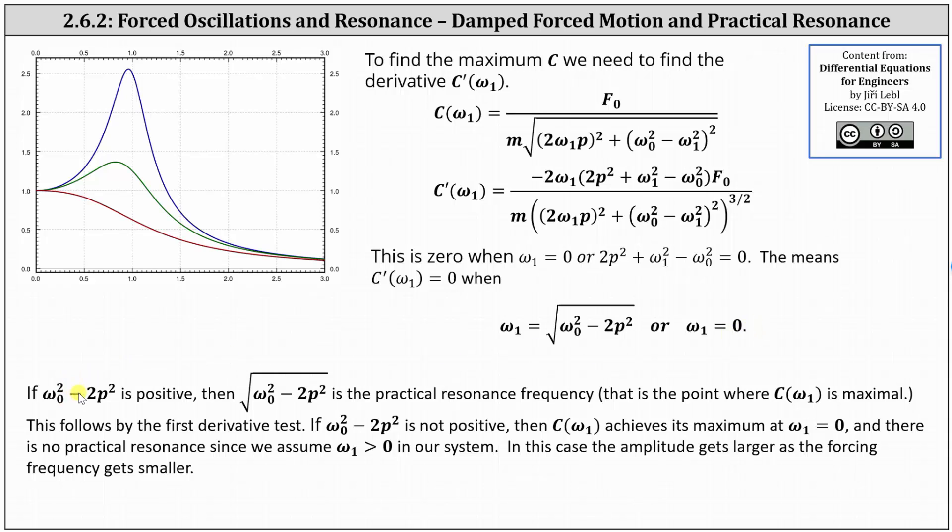If ω_0² - 2p² is positive, then the square root of (ω_0² - 2p²) is the practical resonance frequency. That is the point where C(ω_1) is maximal, which follows from the first derivative test.